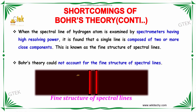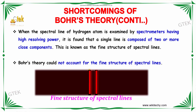When the spectral lines of the hydrogen atom are examined by a spectrometer having high resolving power, it is found that a single line is composed of two or more closely spaced components. This is known as the fine structure of spectral lines. Bohr's theory could not account for the fine structure of spectral lines.